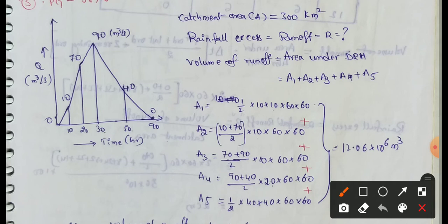Fifth area is A5. This portion area is 1 by 2 into 40. The difference from 50 to 90 is 40. 0 plus 40, the difference is 40, into 60 into 60. We calculate these five areas.